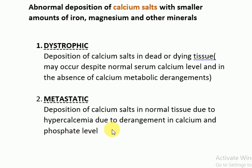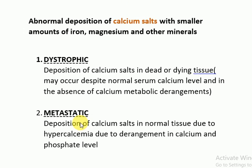In summary, dystrophic calcification is not caused by hypercalcemia, whereas metastatic calcification is caused by hypercalcemia due to the cases already discussed. This is a small but important topic for your exams.